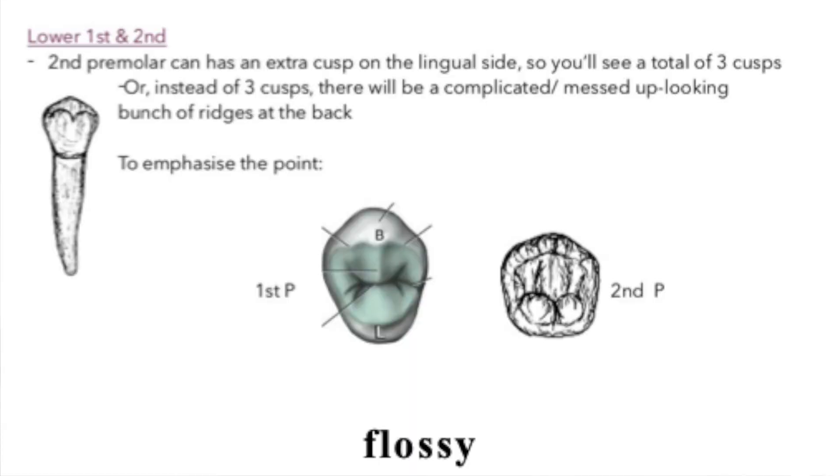If you want to tell the difference between lower first and lower second premolars: the lower first premolar has just one cusp at the back, whereas the second premolar tends to have two, or it just has disrupted ridges.